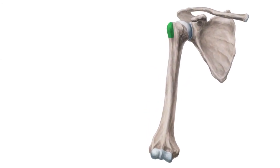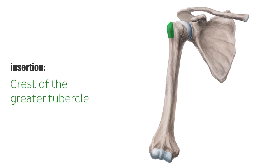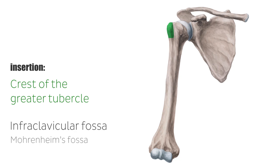All fibers insert together at the crest of the greater tubercle located at the proximal humeral shaft. Due to the different courses of the muscle fibers, the insertion has a recess which is open to the top, preventing the muscle from overstretching. The triangular depression between the pectoralis major muscle, deltoid muscle, and clavicle is called the infraclavicular fossa. Here, the cephalic vein passes through in the subfascia within the deltopectoral groove.